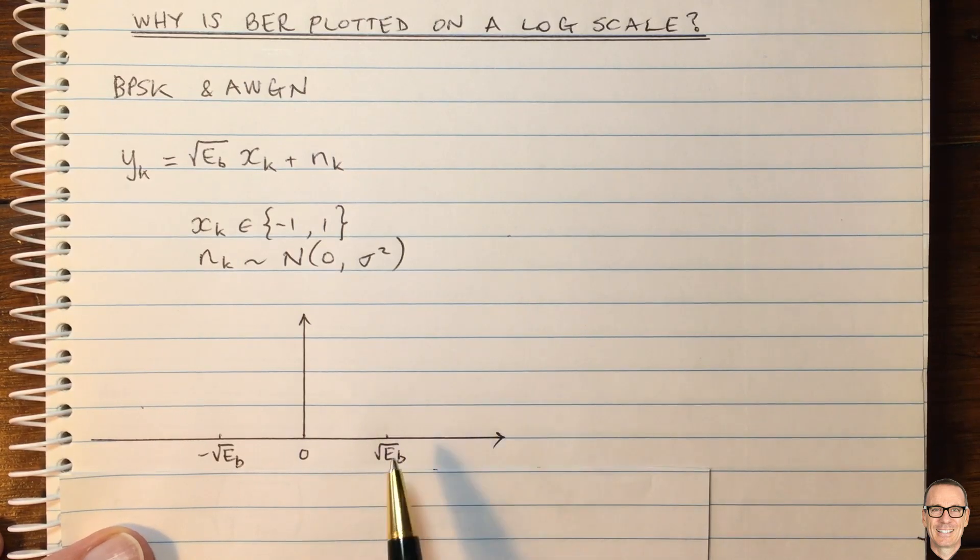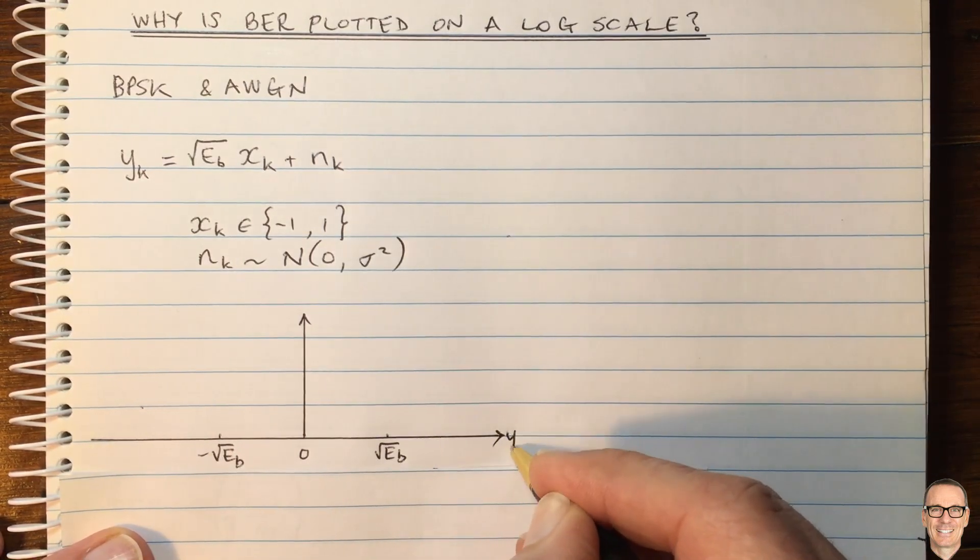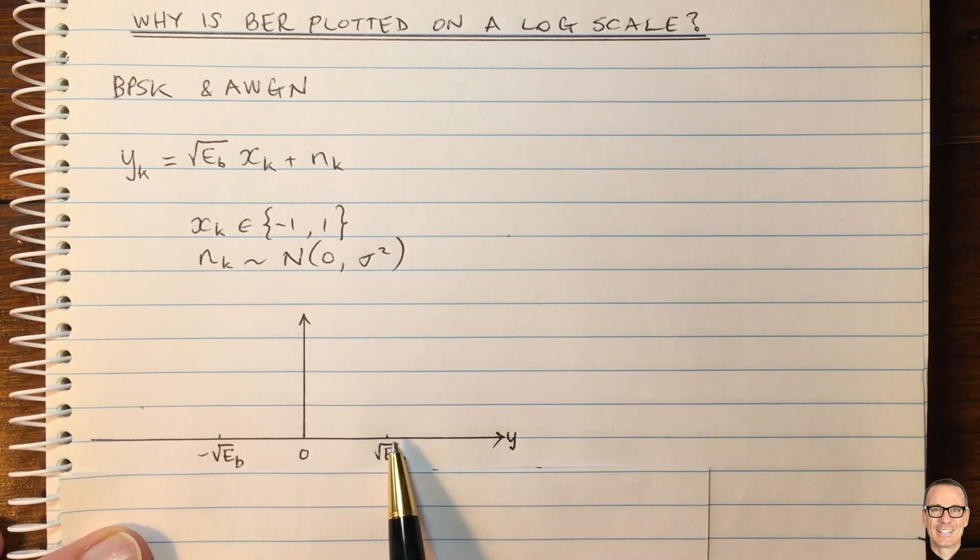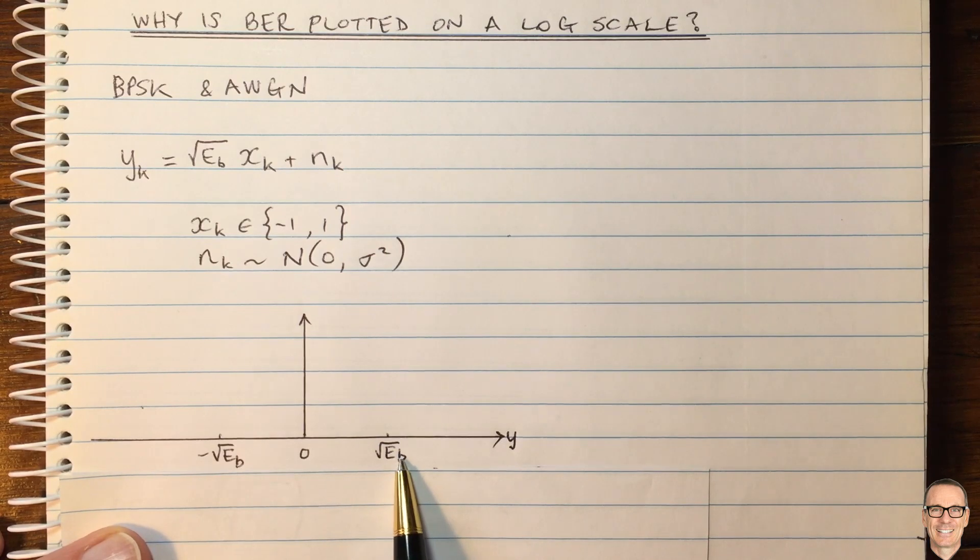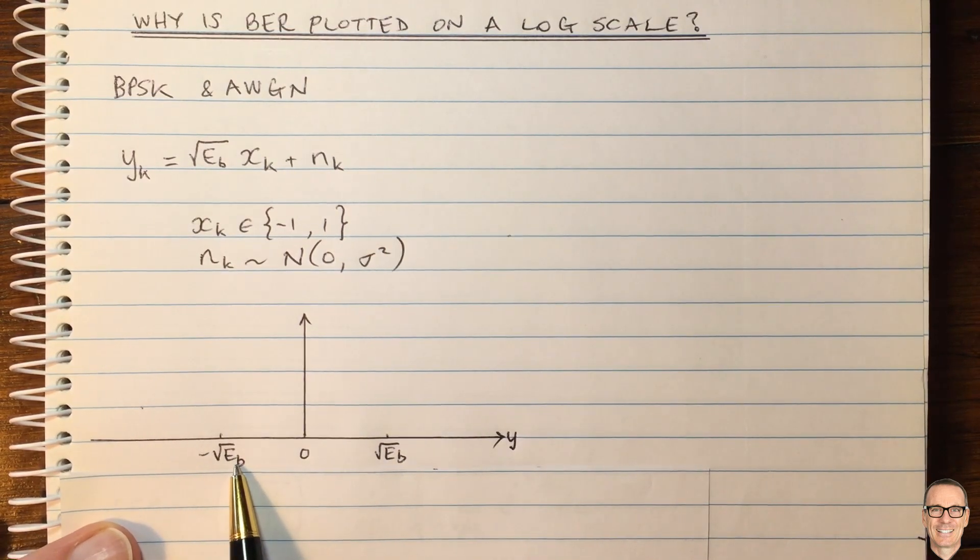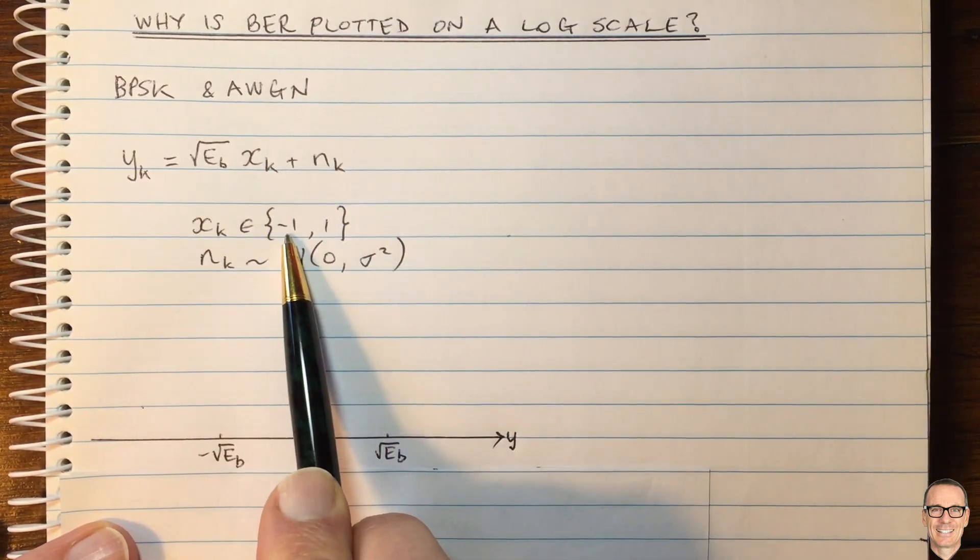So here we're drawing the situation for the output measurement y on this axis, and it's going to come from either a positive energy of the square root of Eb or a negative energy of the square root of Eb, depending on whether the input data was a plus one or a minus one.